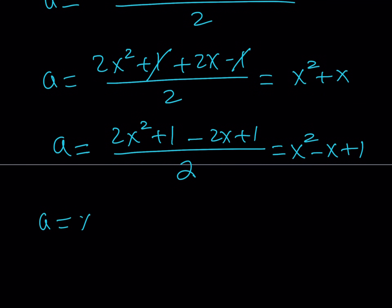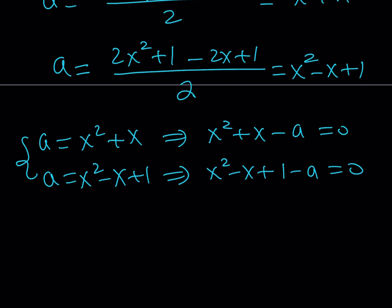Since A is equal to X squared plus X, then I can write this as X squared plus X minus A is equal to 0. Now we got a quadratic. And from the second one, we're also getting a quadratic. X squared minus X plus 1 minus A is equal to 0. So these equations, obviously, are multiplied together, and they make our quartic. All right. Great.